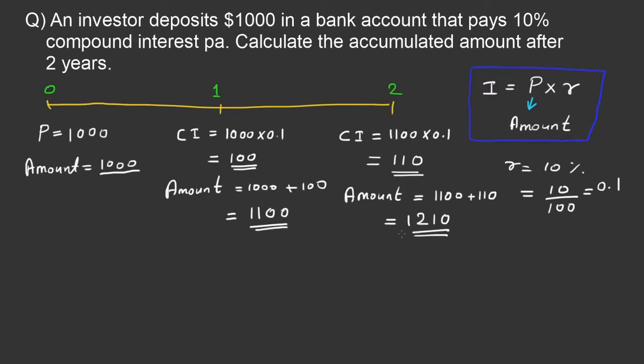So we calculated the accumulated amount after two years as $1210. The question is solved.